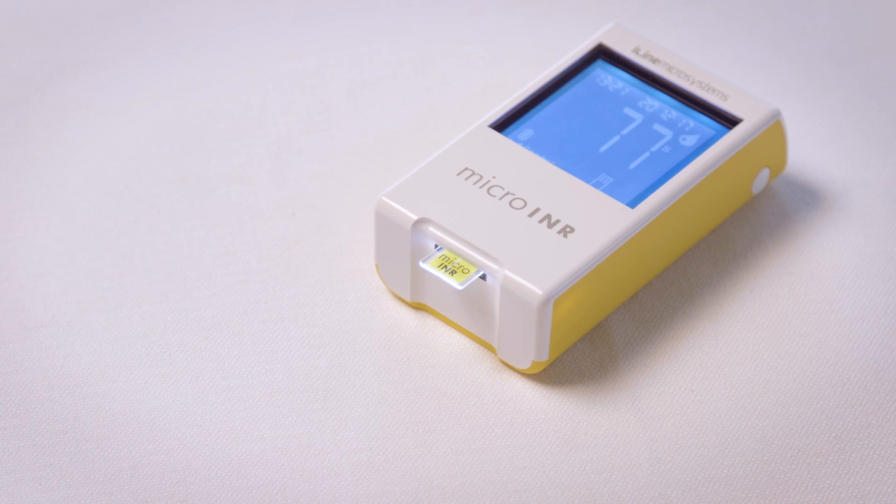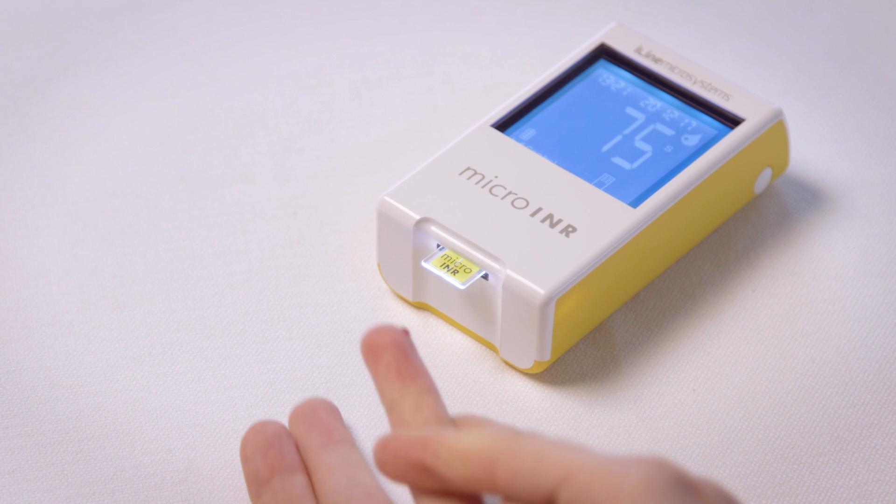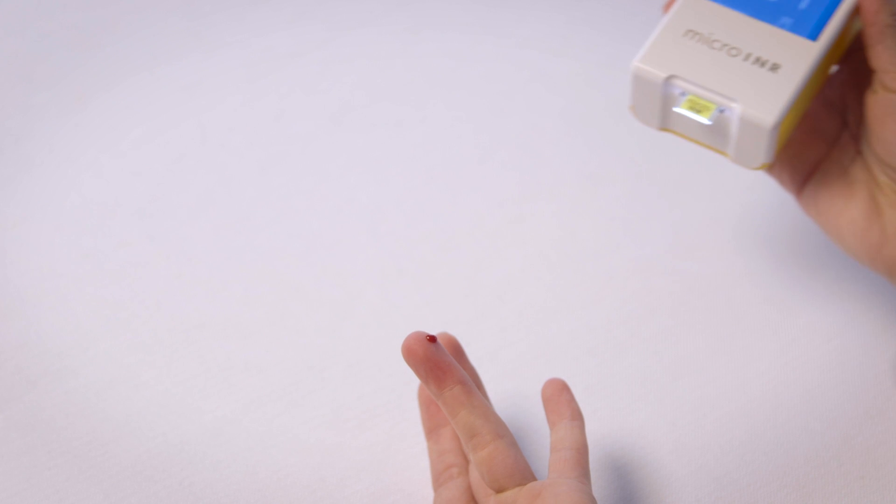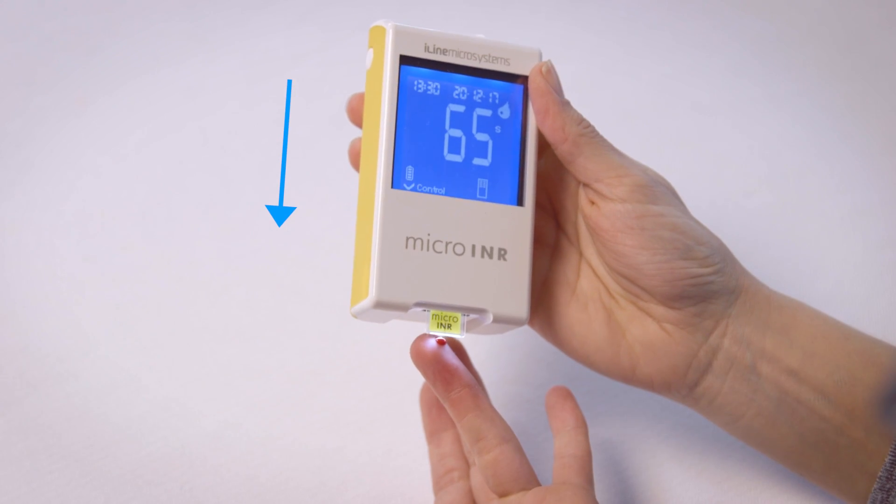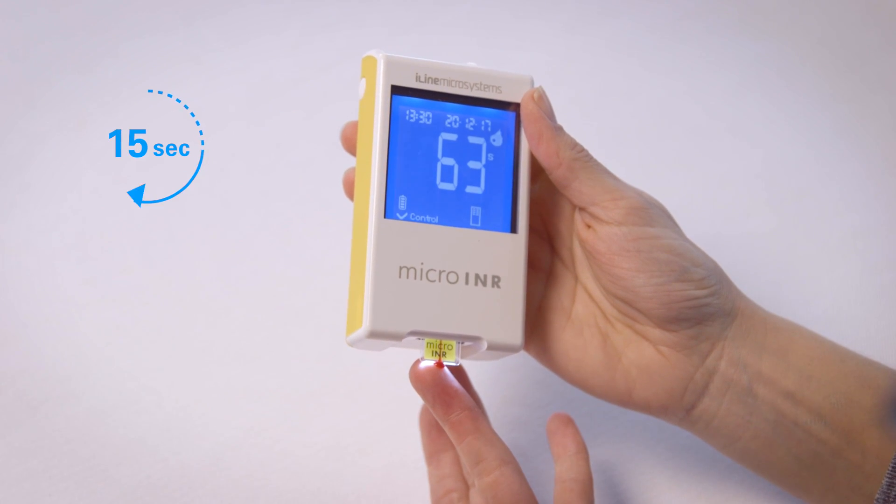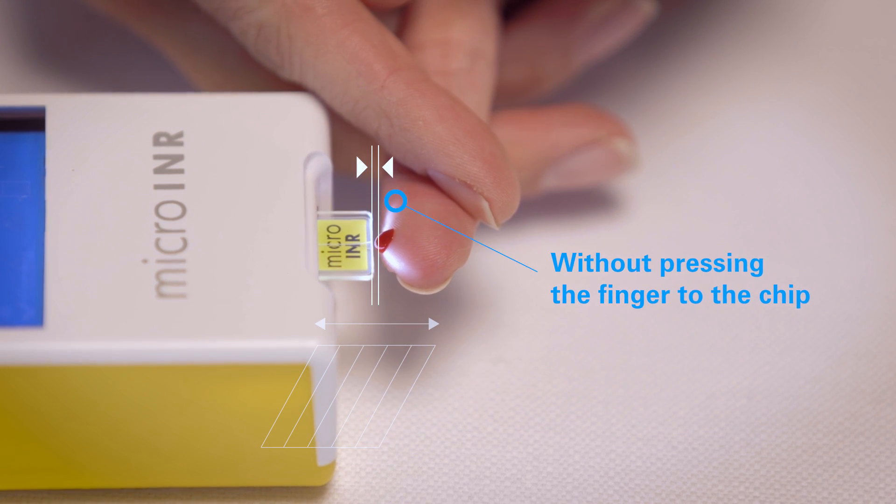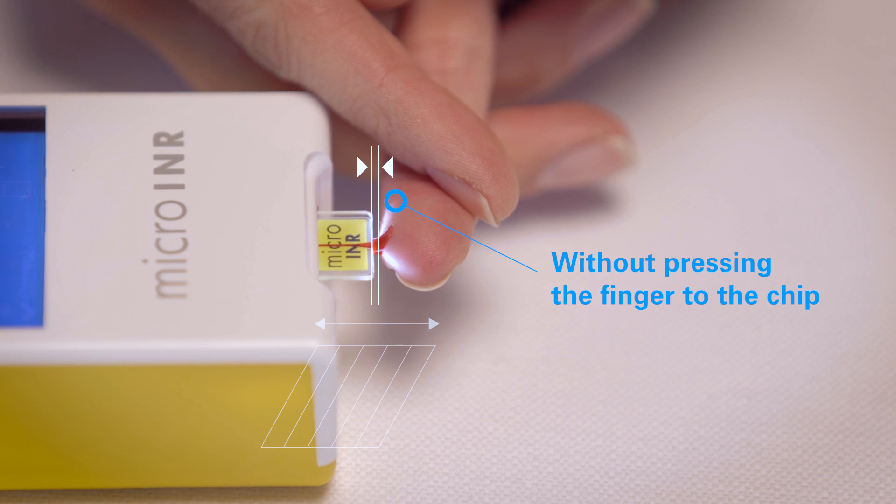Blood can be applied in two different ways. You can either move the finger to the meter or you can move the meter to the finger. Apply the blood drop immediately after finger prick without pressing the finger to the chip. Otherwise, the entrance is blocked and the blood can't be aspirated into the chip.